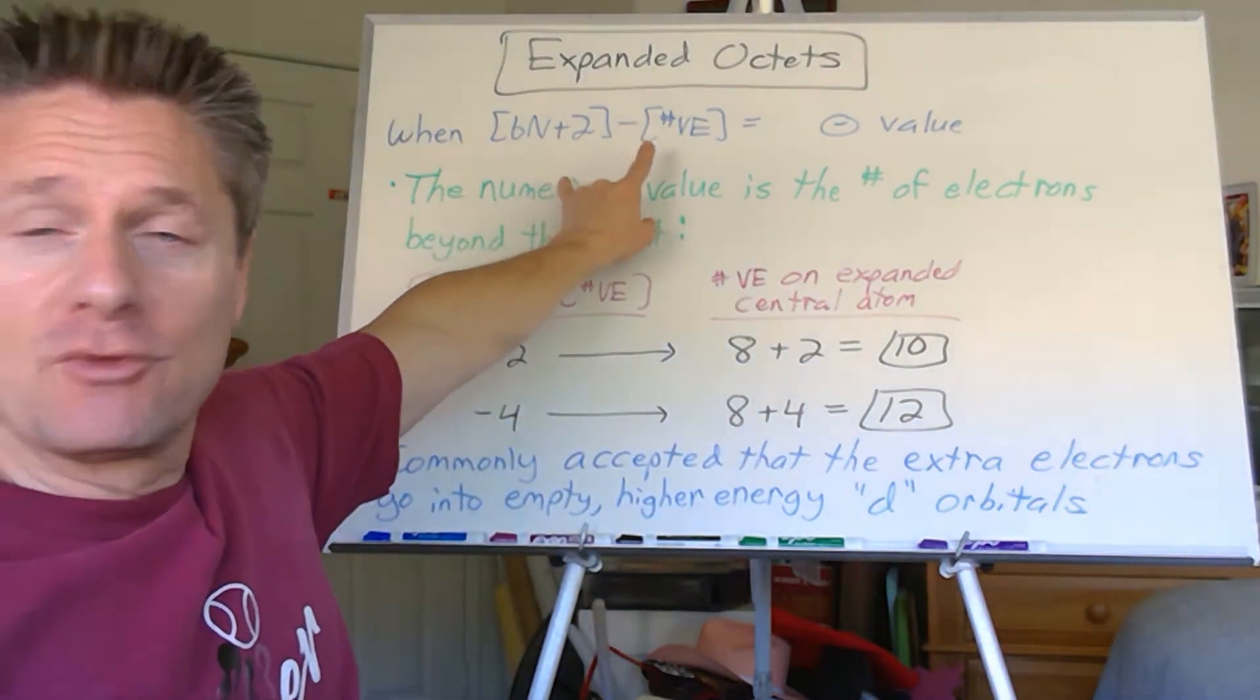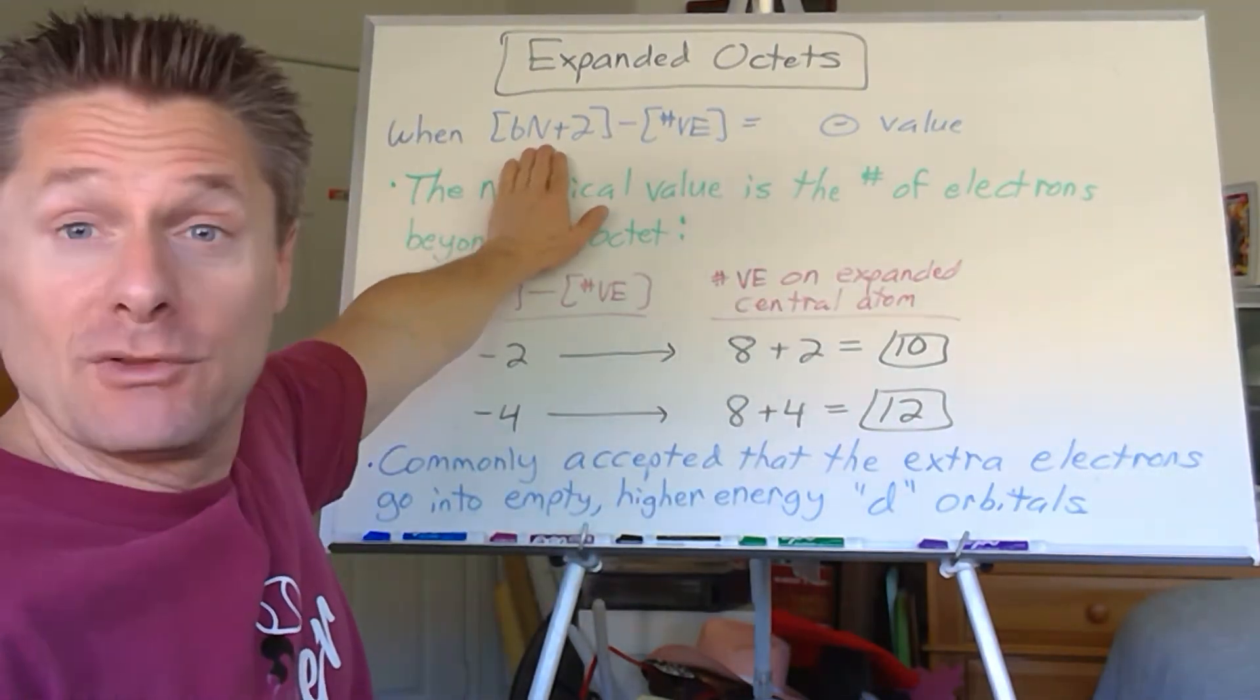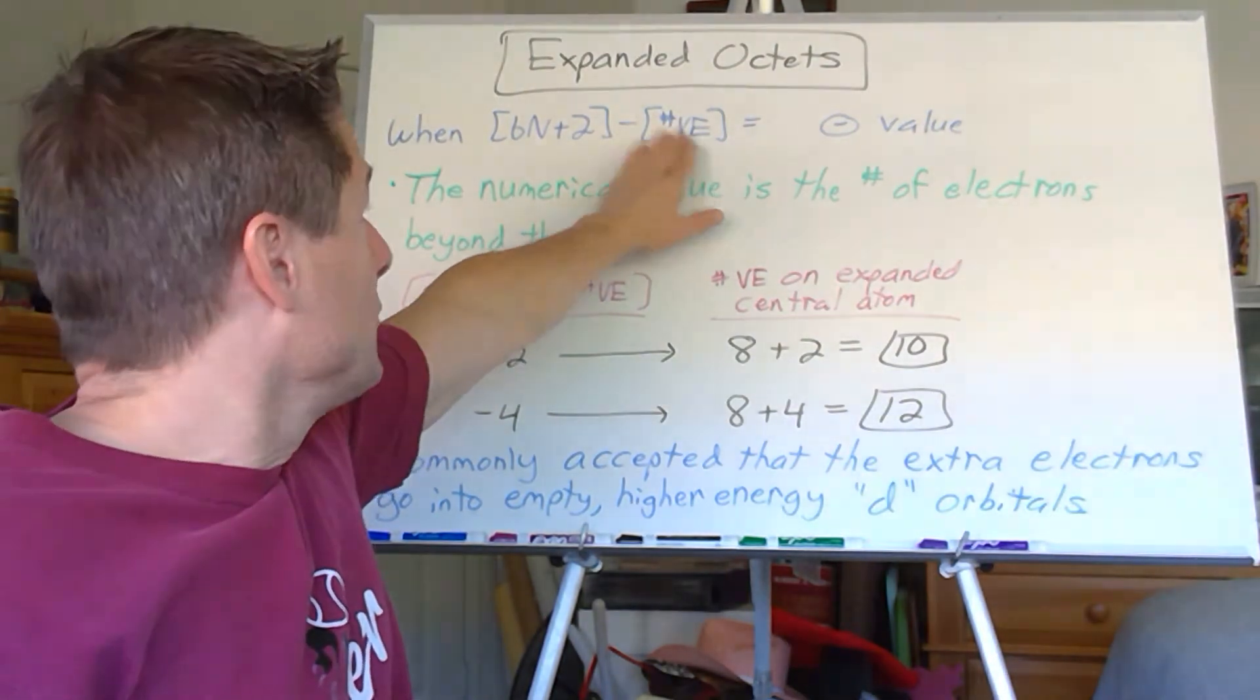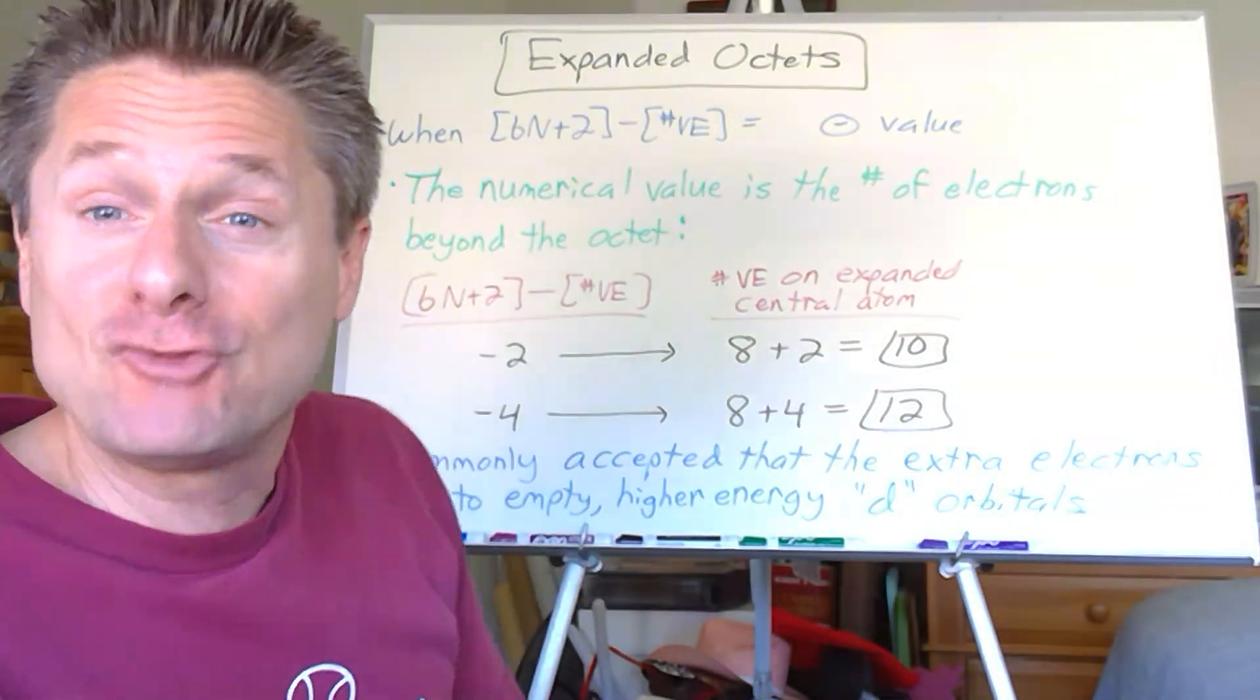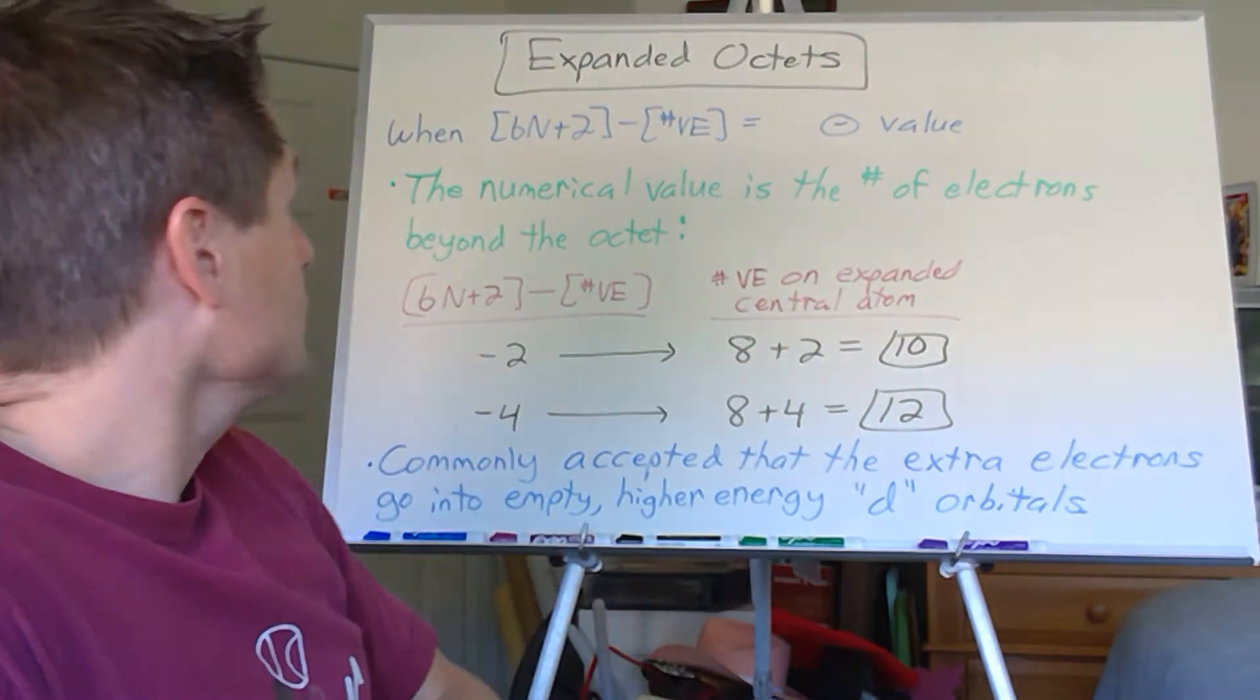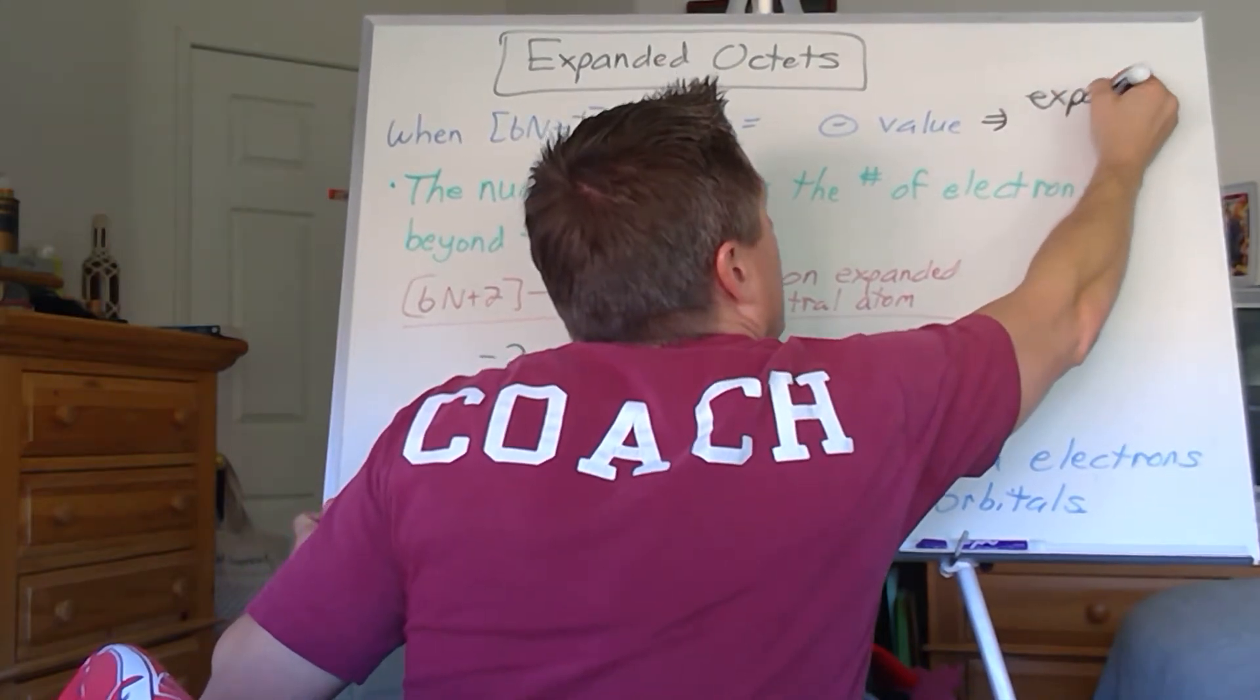So if we do step two of our Lewis structure, 6n plus 2 minus number of valence electrons, if that's a negative value, right? 6n plus 2, the number of electrons we need for all single bonds. This is the number of electrons we have. So 6n plus 2 is smaller if we have more electrons than we need for all single bonds. We have too many, which means we have an expanded octet. That means we've got an expanded octet. You knew that already.